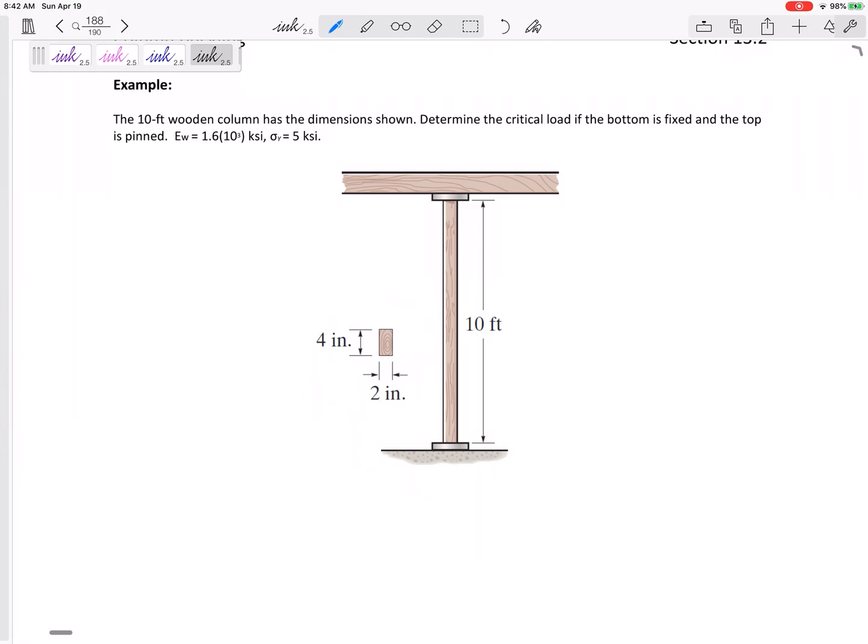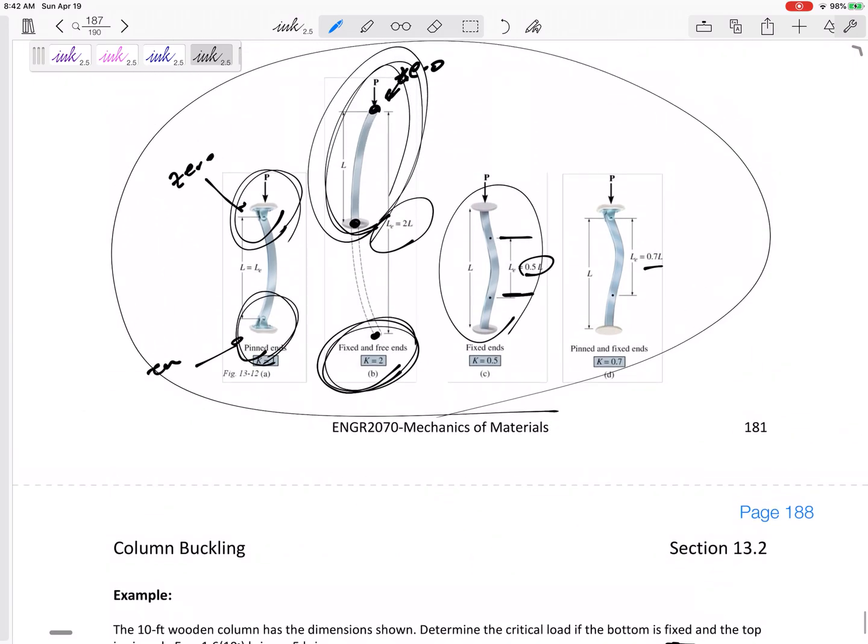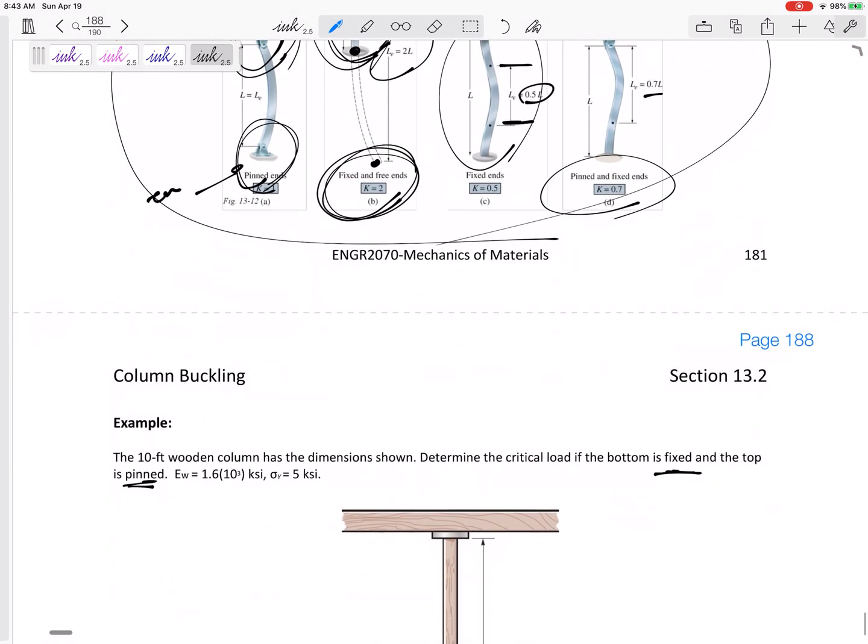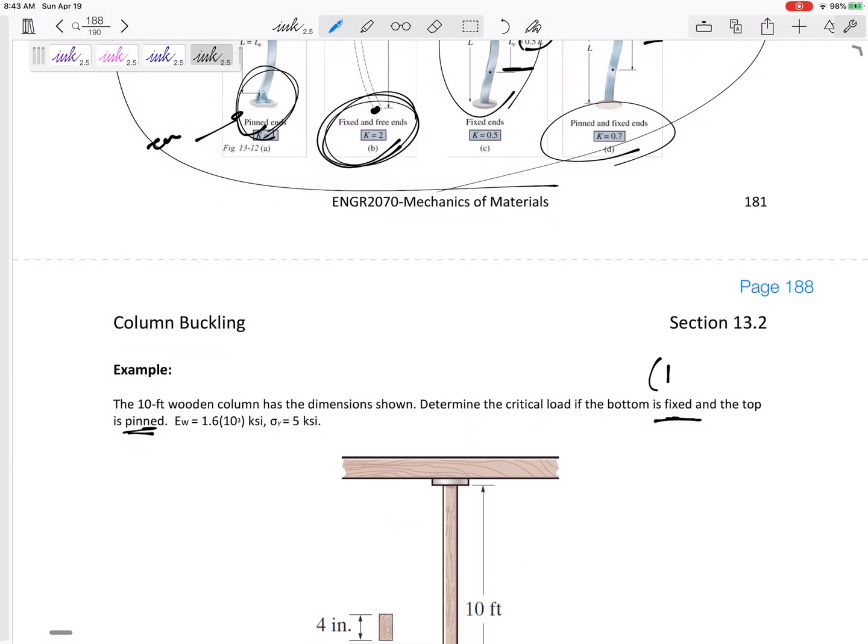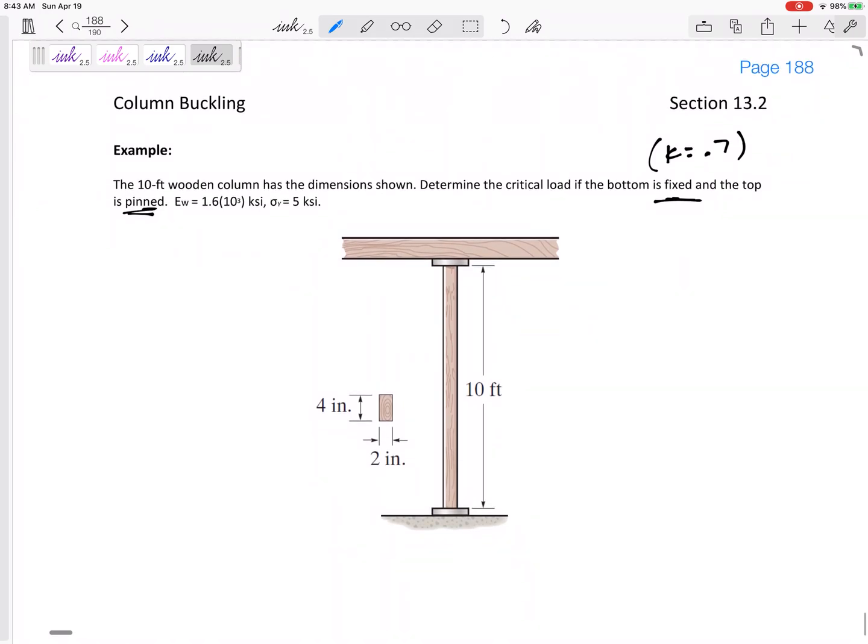If it is bottom is fixed, top is pin. So fixed and pin, if we look at the page before, this would be given to you, K is 0.7. So fixed and pin, K is equal to 0.7.